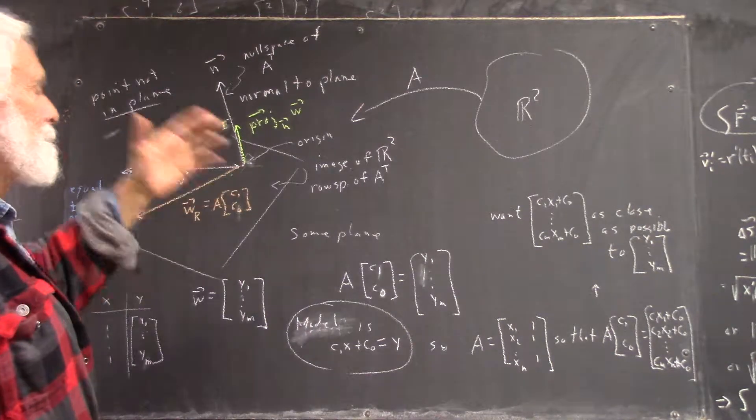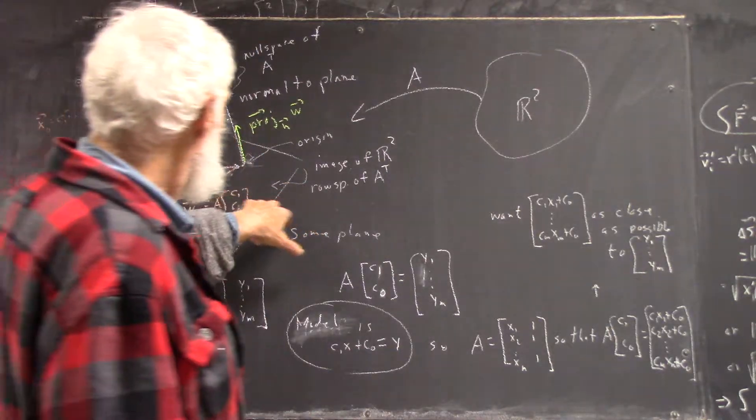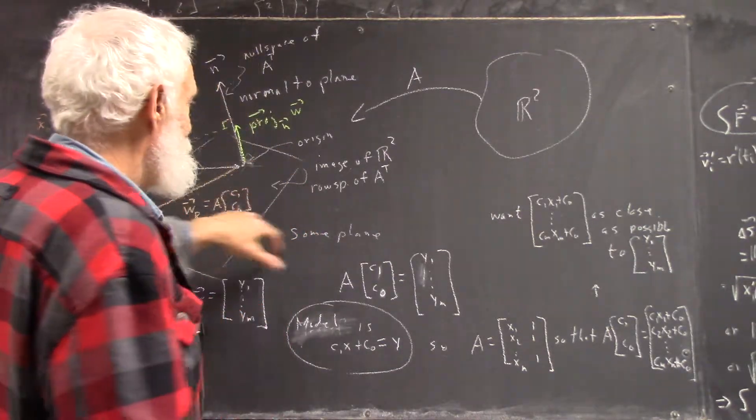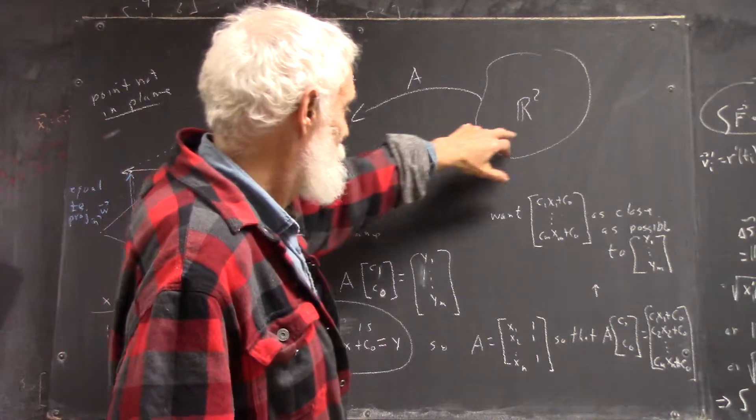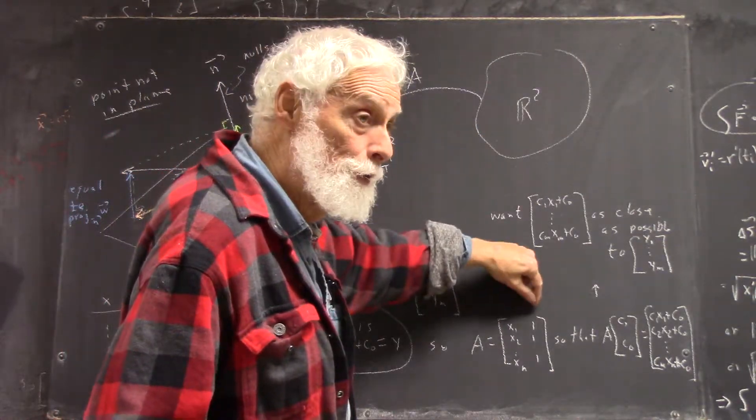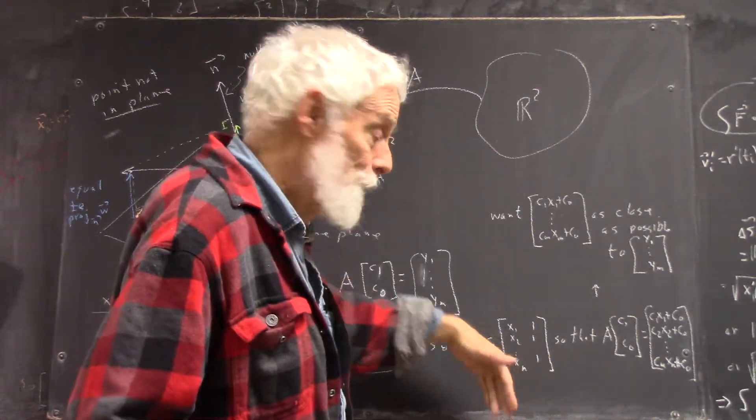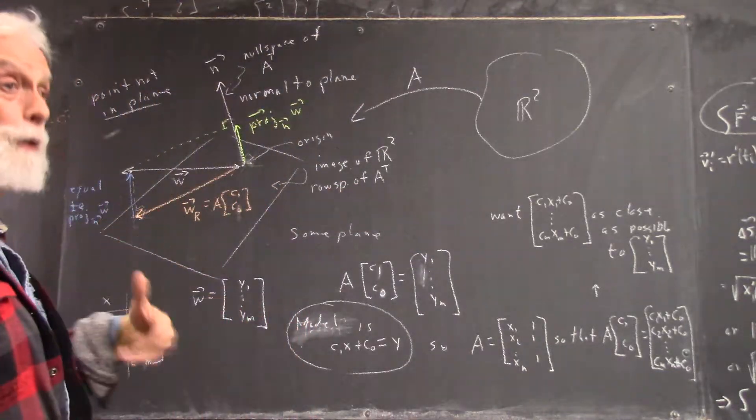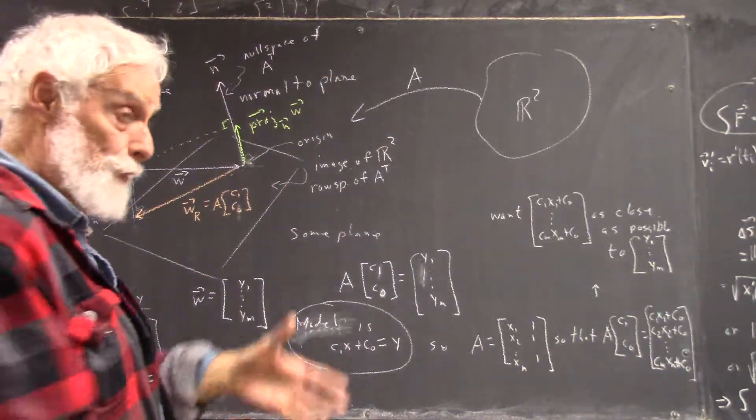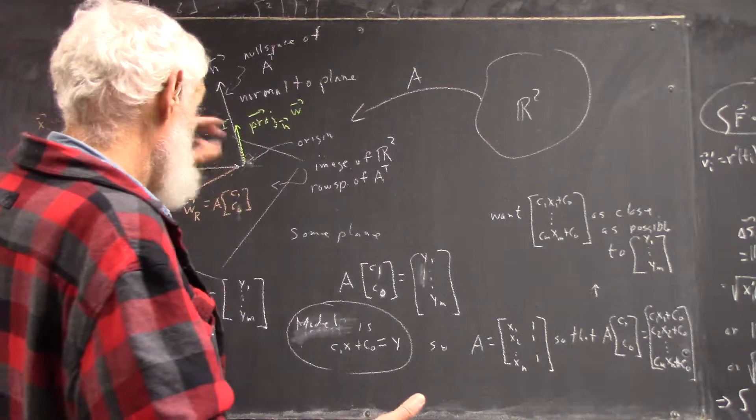So then I labeled, okay, this is your image of R2. Because this is a mapping now of R2 to Rm. In this case, for this picture, M would be 3. But it could be any dimension. You just can't visualize it.